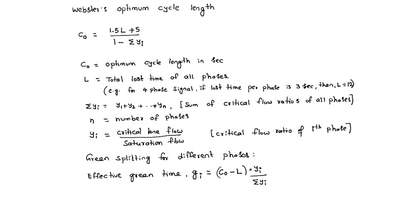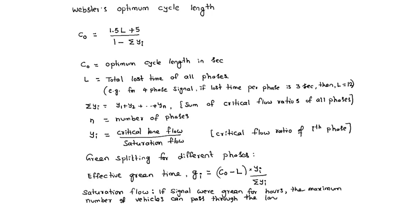Saturation flow definition is: if signal were green for one hour, the maximum number of vehicles that can pass through the lane in one hour. That is saturation flow.